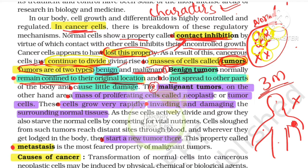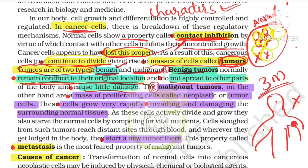Second point: benign tumors do not spread to other parts of the body. Third point: they cause little damage. So compared to malignant tumor, benign is a better outcome.